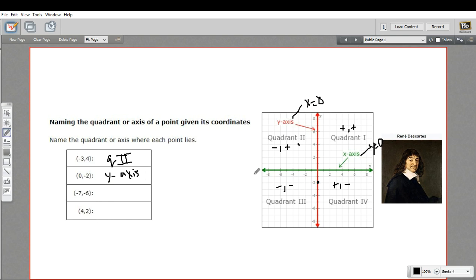Next, we have negative seven, negative six. That's both negative. So it should be here in the third quadrant. But let's plot it, negative seven, negative six. Right there. Yep. So that's quadrant three.